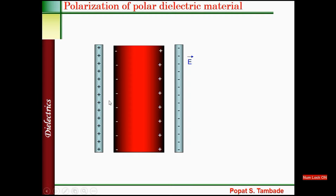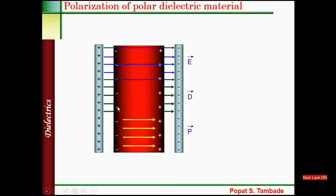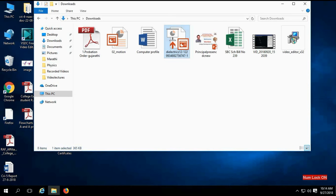Now, if we place a dielectric material in the electric field between two parallel plates — one connected to positive and one to negative — an electric field is set up between them and the dielectric slab is inserted. Here E is the applied field. We also have D and P: P is the electric polarization inside the material, E is the effective electric field or net electric field, and D is called electric displacement.